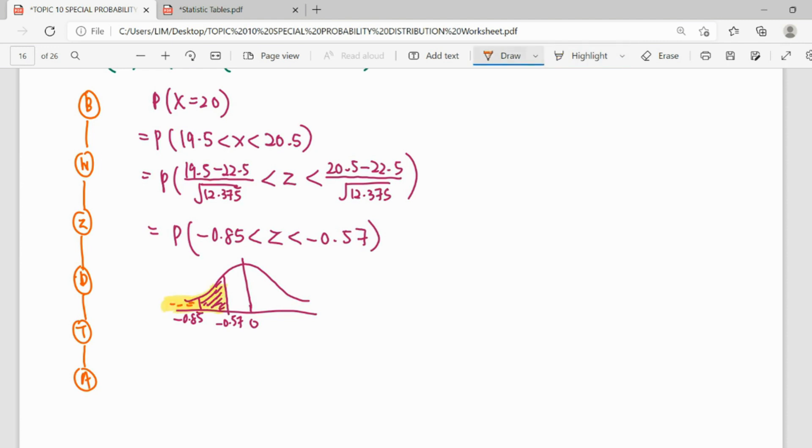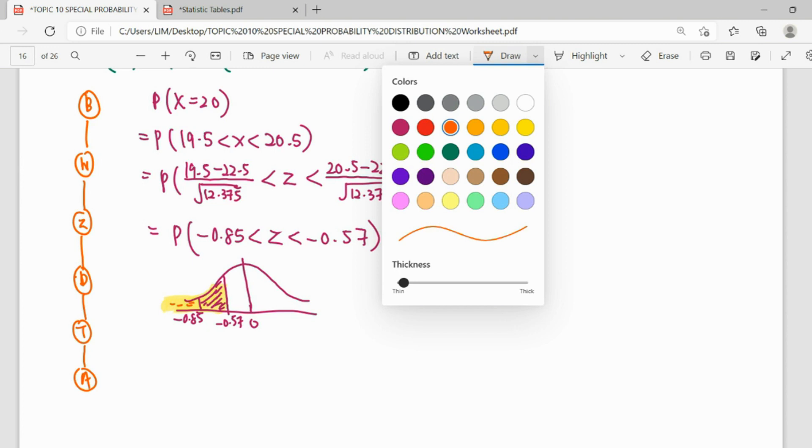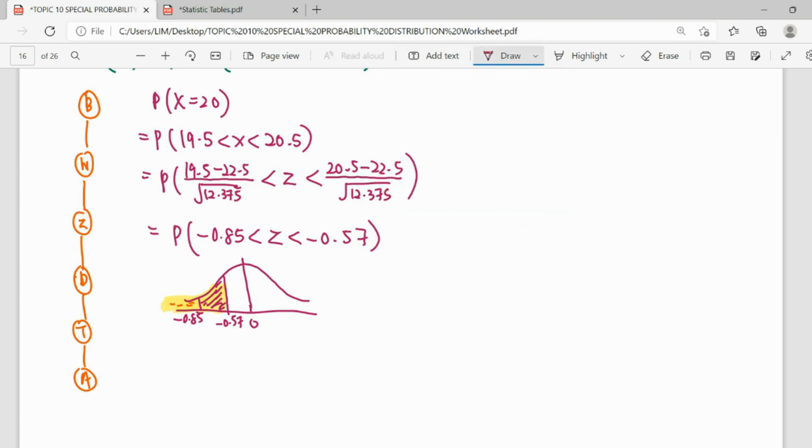So from the table, we take the tail for 0.57, subtract the tail for 0.85. Okay, so we read from the table. 0.57 gives us 0.2843, and the other one, 0.85 gives us 0.1977.